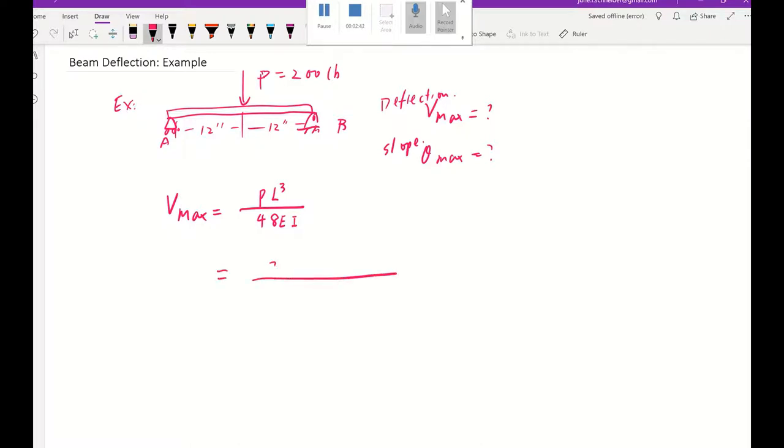Our P is 200 pounds and our L is going to be the entireness of this beam. So that will be 24 inches cubed.